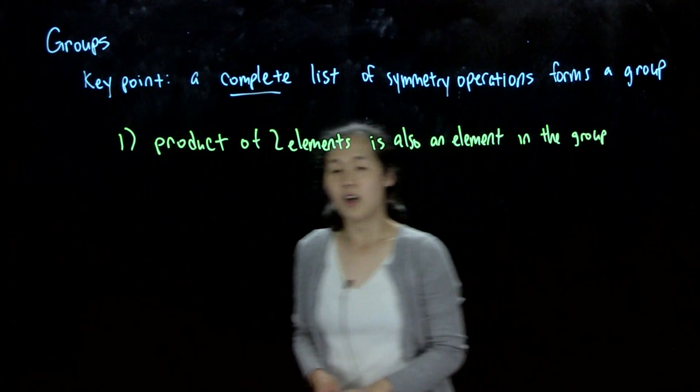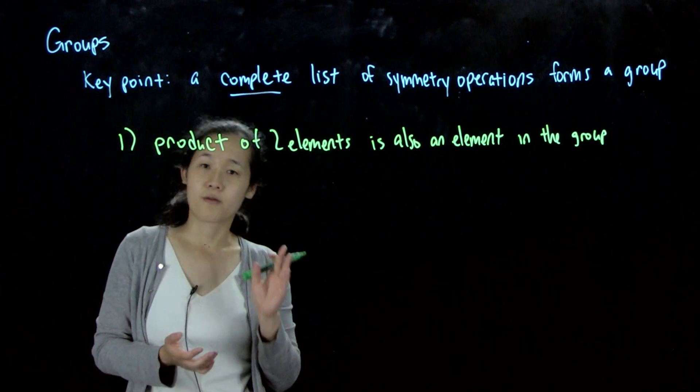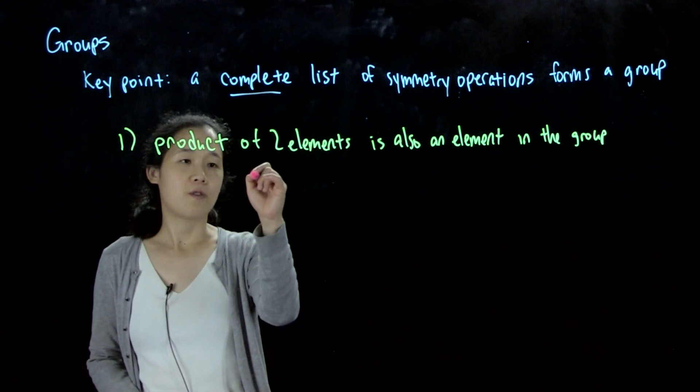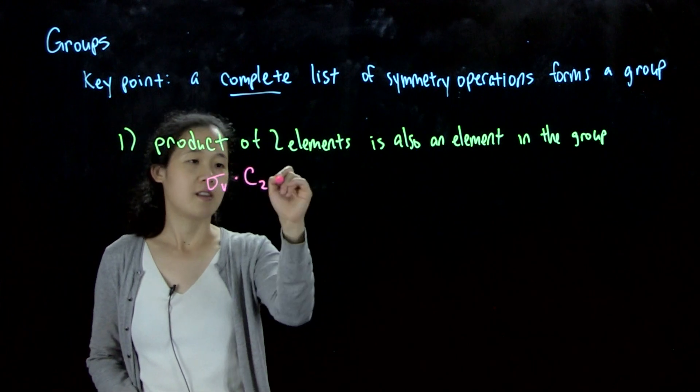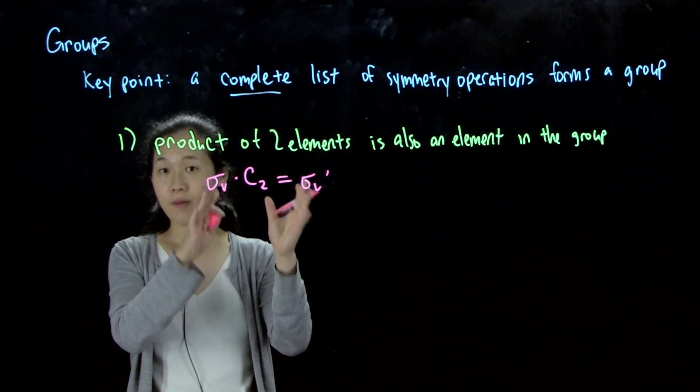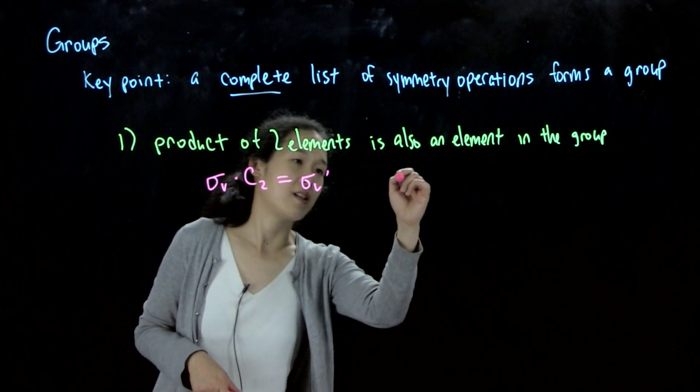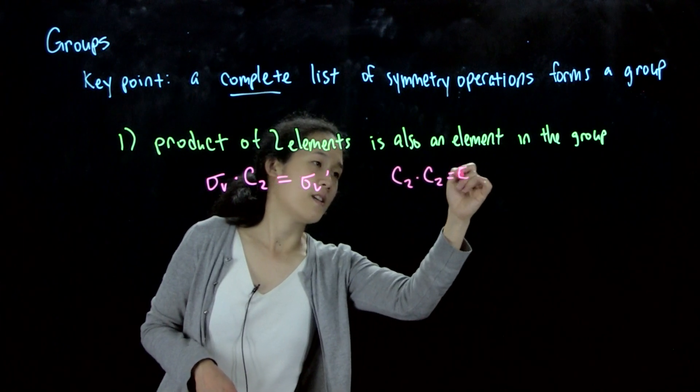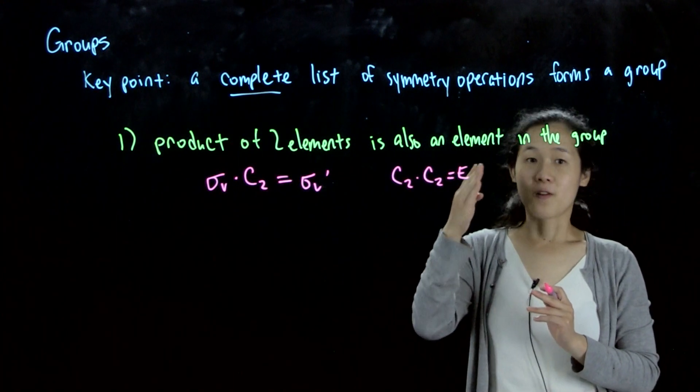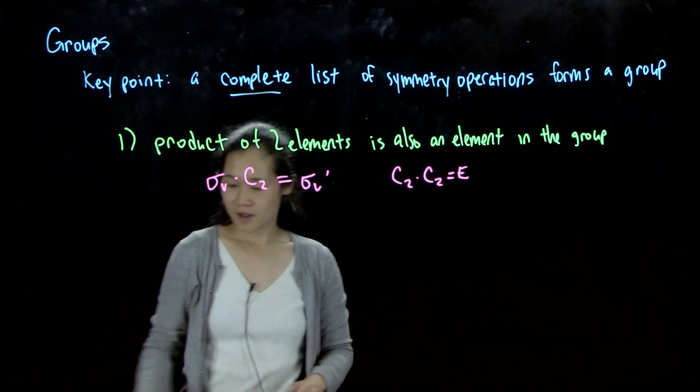And so what this means is, if you followed the last video, if you take a product of two symmetry operations, that's still got to be a symmetry operation for that molecule. So one of the examples that we used for ethylene oxide was that if you did a C2 followed by a sigma V, this equals sigma V prime. All three of these elements are symmetry operations that are valid for that molecule. The other example I did was if you did C2 followed by C2, it's going to be E. So again, this is actually why the identity element is so critical, because identity element's always got to be part of any of these groups. So anyway, product of two elements is an element within the group. Great.